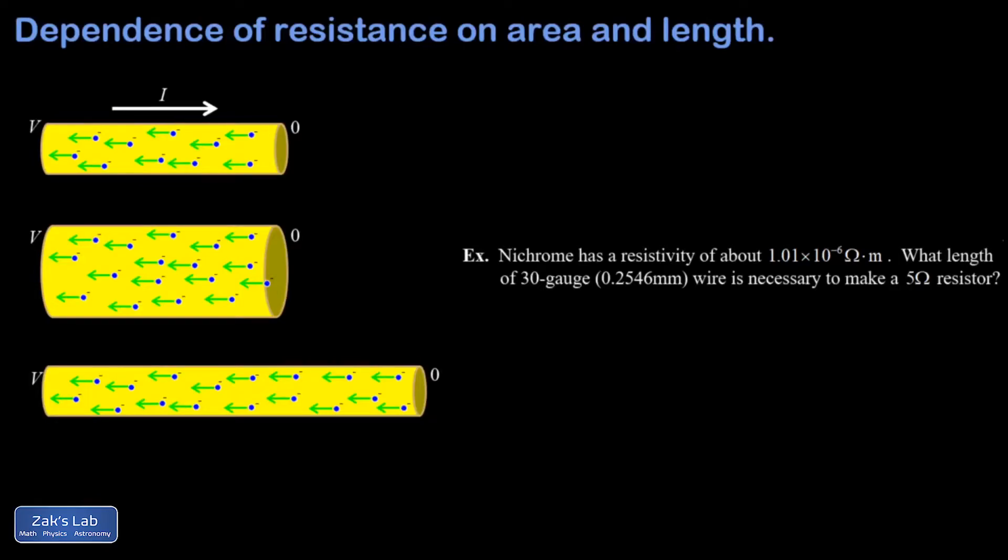In this video we're determining the dependence of resistance on the area and length of a conductor. I have a little section of a conductor and I'm trying to look at what's happening microscopically. There's a potential difference across this thing. I see the current is flowing to the right, but we know what that really means is electrons are flowing to the left.